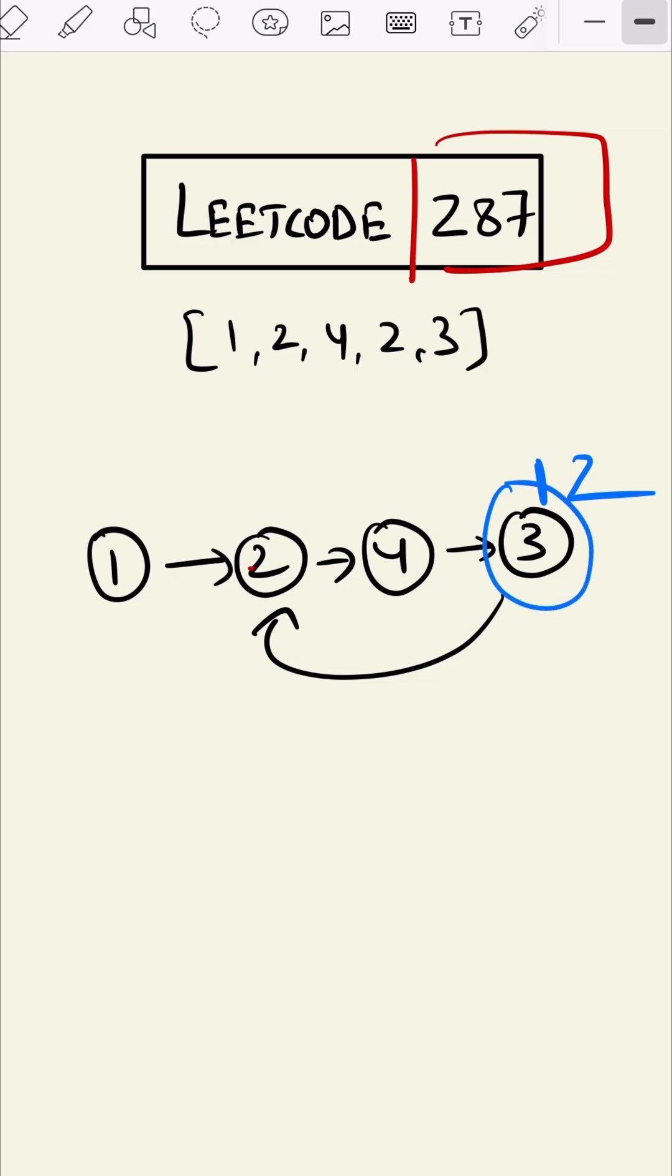Now when both the pointers meet, we'll reset that position. We'll keep one pointer here and one pointer at the starting position, and we'll increment only one value till they meet. So we'll increment one here and this here. They both meet at this node, hence this node is our duplicate value.